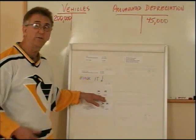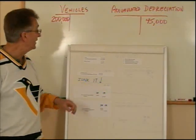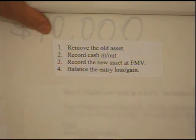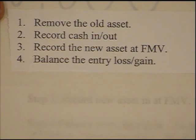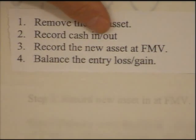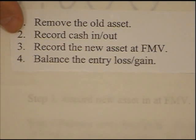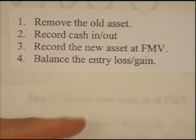When we remove an item — whether we junk it, sell it, or trade it in — there are four steps to successfully remove your assets, which I call my four steps to successful asset removal. Step 1: remove the old asset. Step 2: record cash in or out — cash in is a debit on the left, cash out is a credit on the right. Step 3: record the new asset at its fair market value. Step 4: balance the entry with a loss or gain, as we'll see in a few minutes.